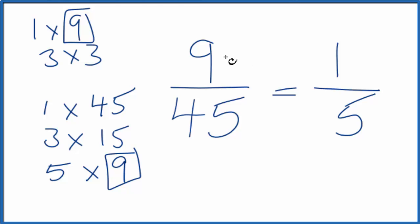So when we simplify the fraction 9/45, we get 1/5. These are equivalent.